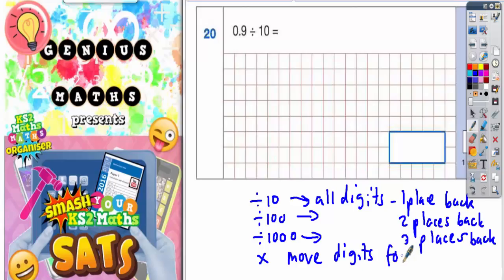Multiplying by 10 would be move the digits one place forward. Multiplied by 100 would be move the digits two places forward. And multiplied by 1000 would be move the digits three places forward.